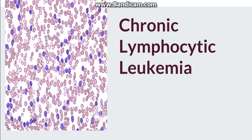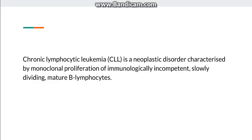Hello everyone. In this video we will discuss about chronic lymphocytic leukemia. CLL is a neoplastic disorder characterized by monoclonal proliferation of B lymphocytes. These B lymphocytes are mature in nature but they are immunologically incompetent, so the plasma cells formed from these B lymphocytes are defective.